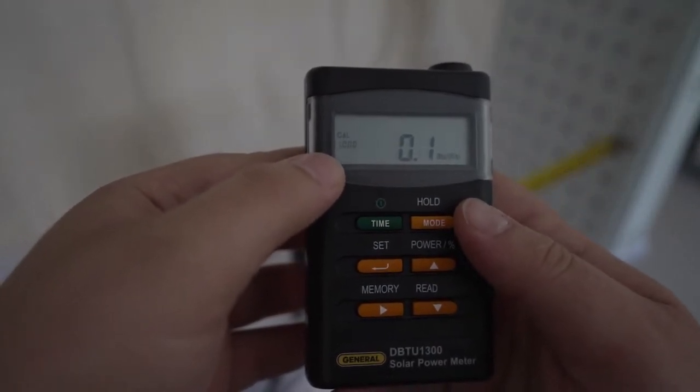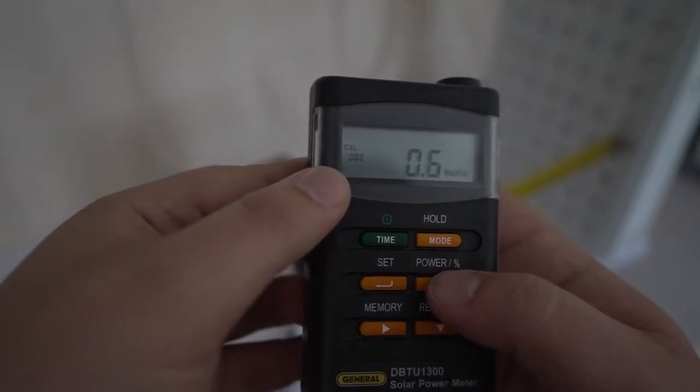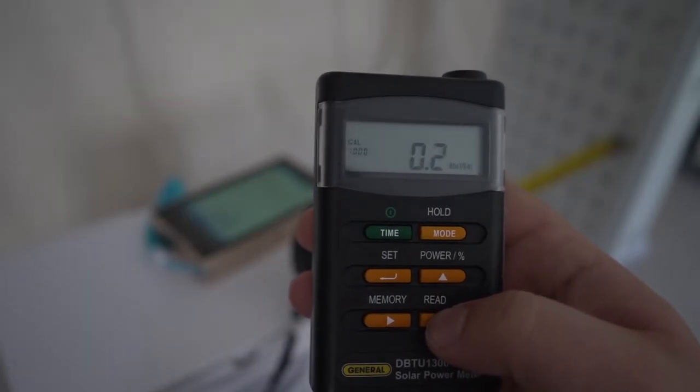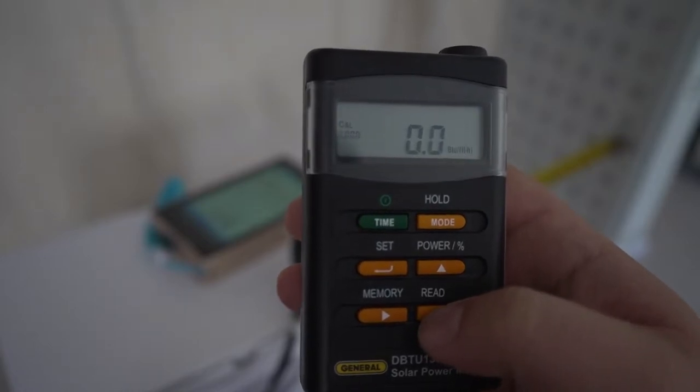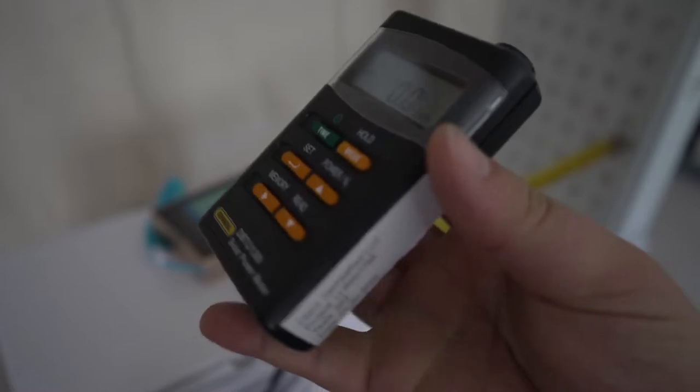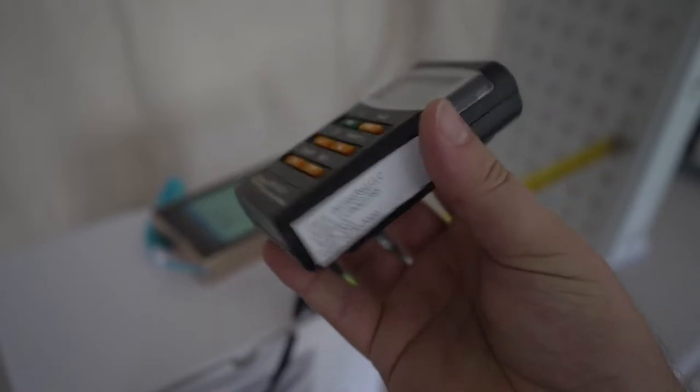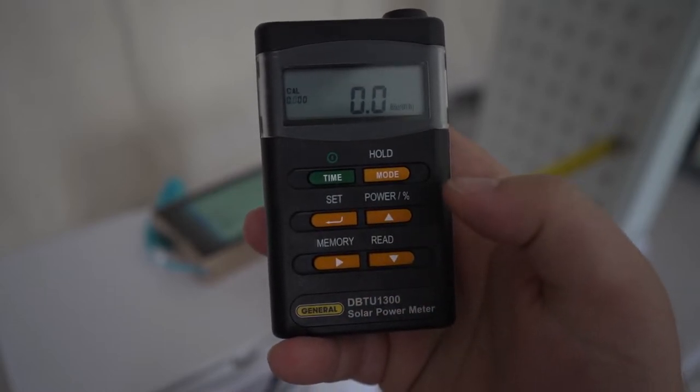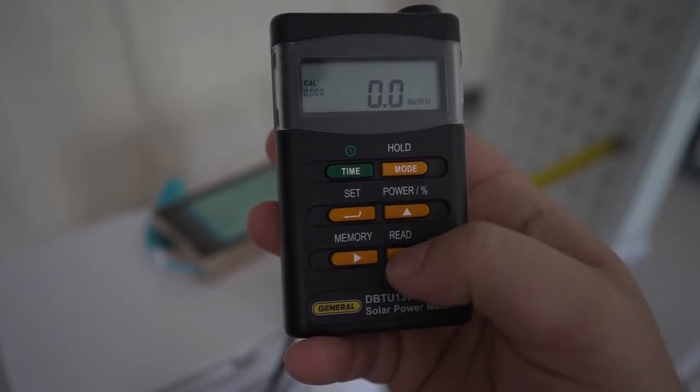And now we see that the number one in the cal is blinking. So that means I can change it now. So we know these read falsely high by almost 2x. And the more precise number that I got from my lab data comparing this specific unit to the lab measurements was that we're going to do about 0.55 as the correction factor.